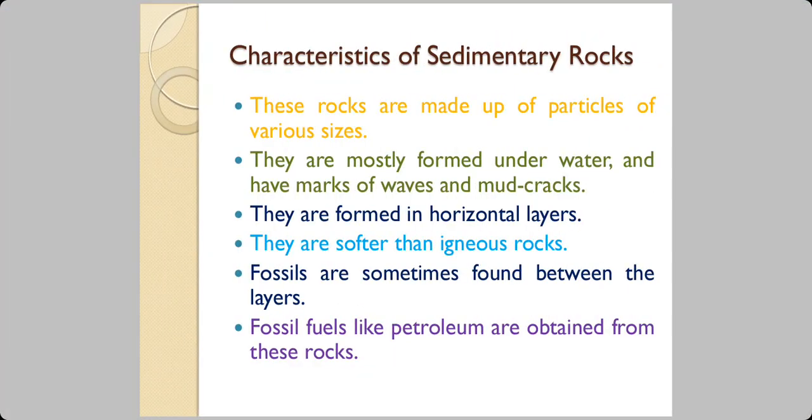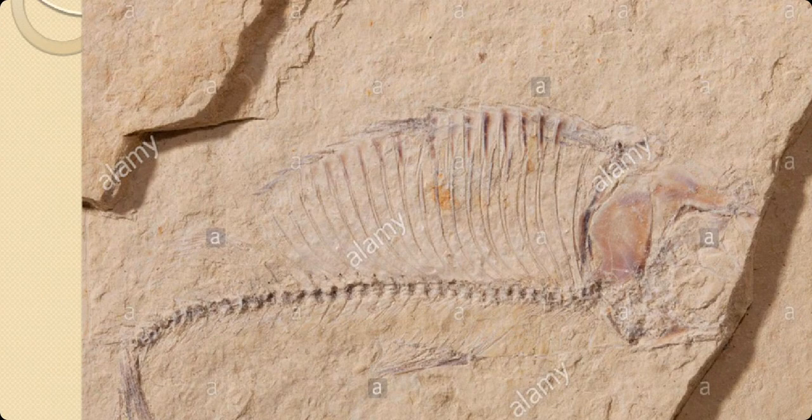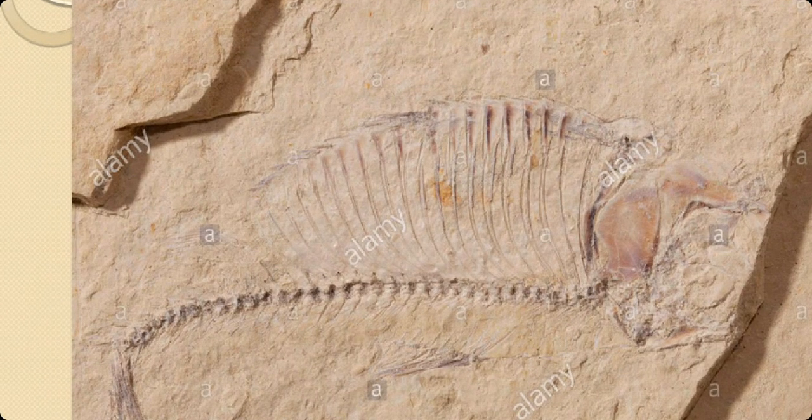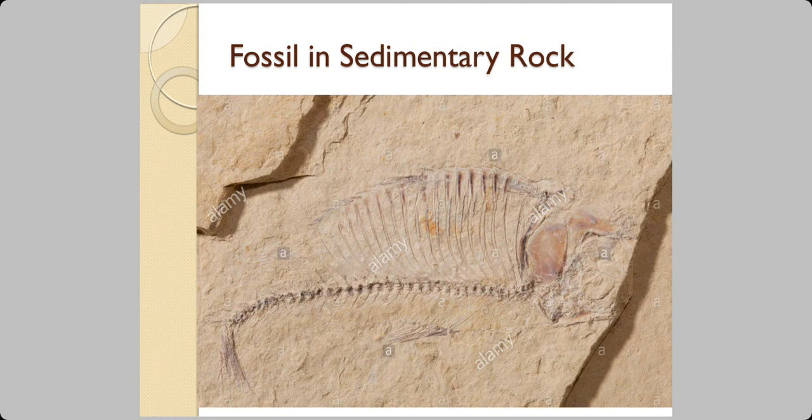The specialities of sedimentary rocks are: these rocks are made up of particles of various sizes. They are found mostly underwater and have marks of waves and mud cracks. They are formed in horizontal layers. They are softer than igneous rocks. Fossils are sometimes found between the layers, and fossil fuels are also obtained from these rocks. Here is a picture of a fossil of a fish from sandstone, which is a sedimentary rock.